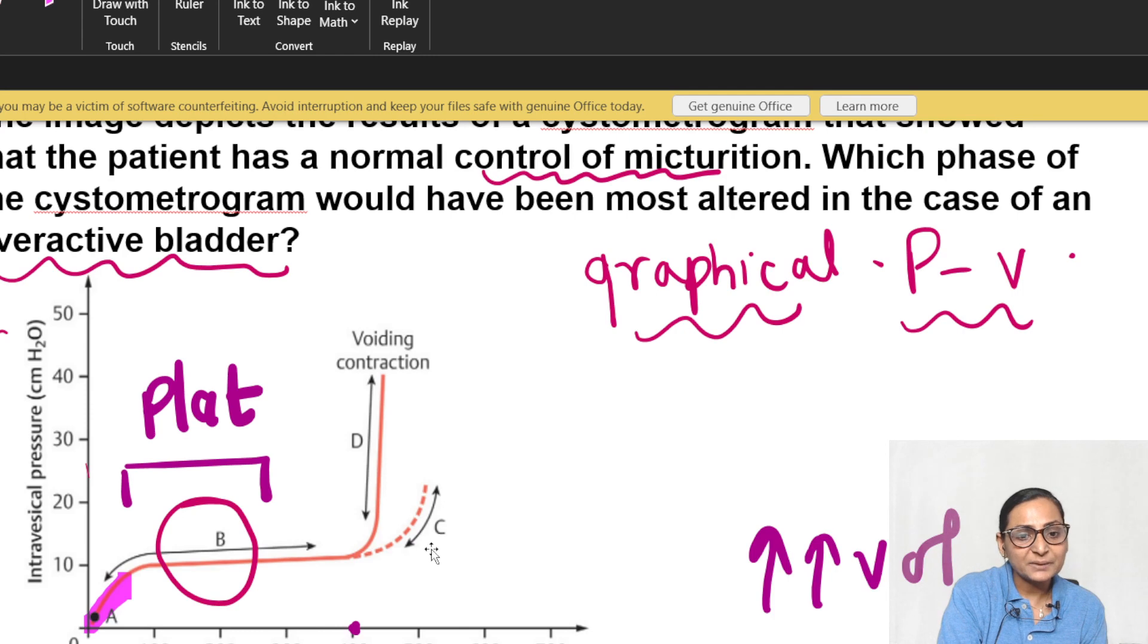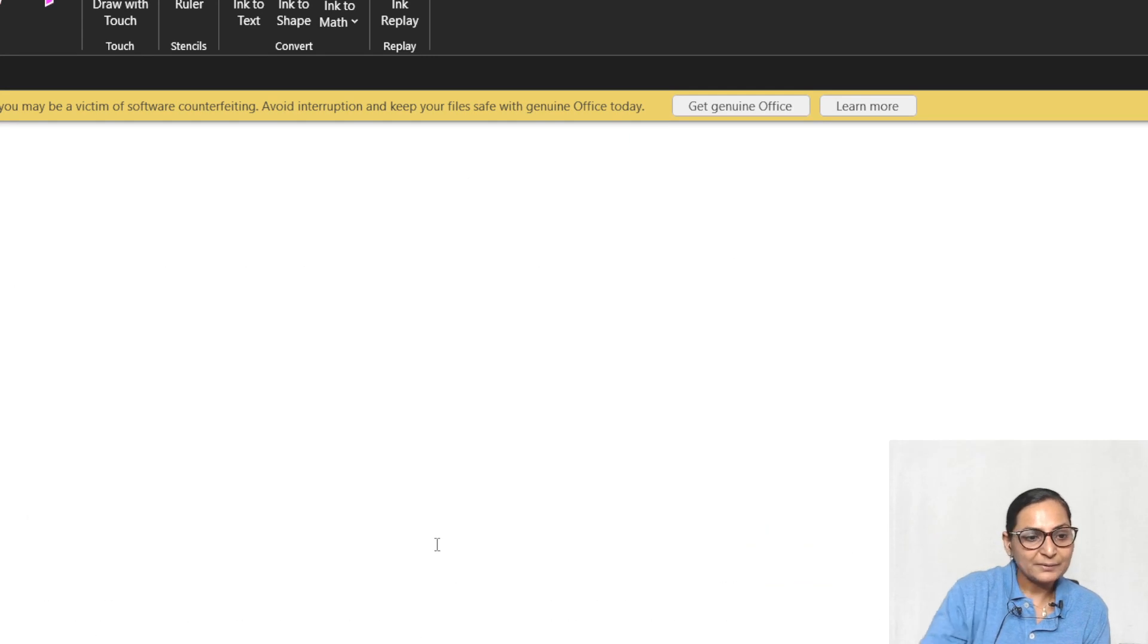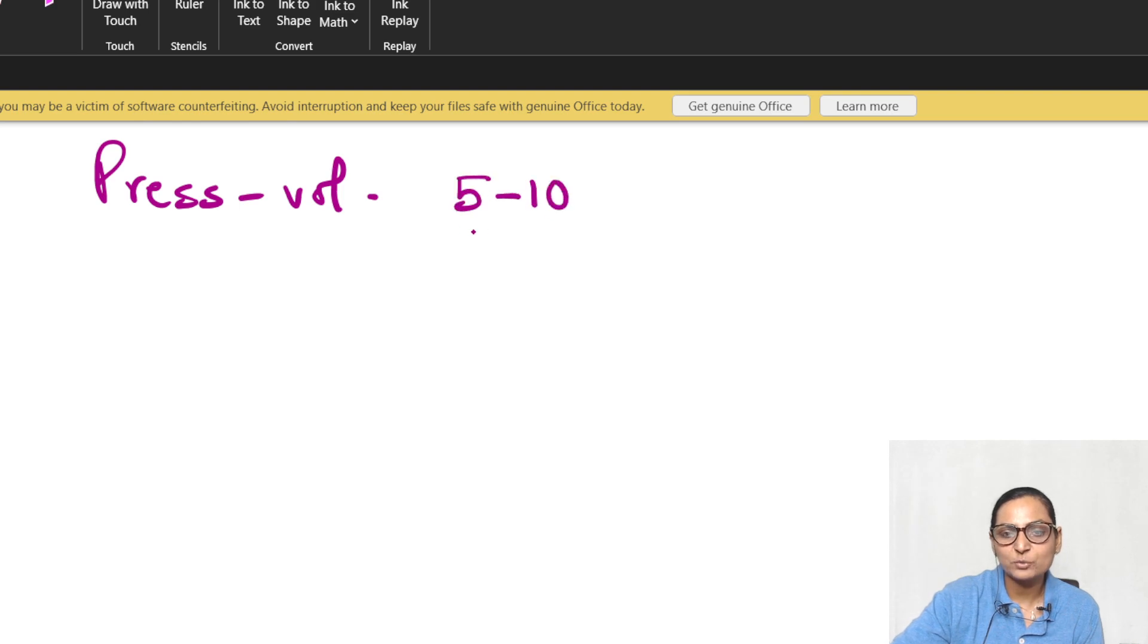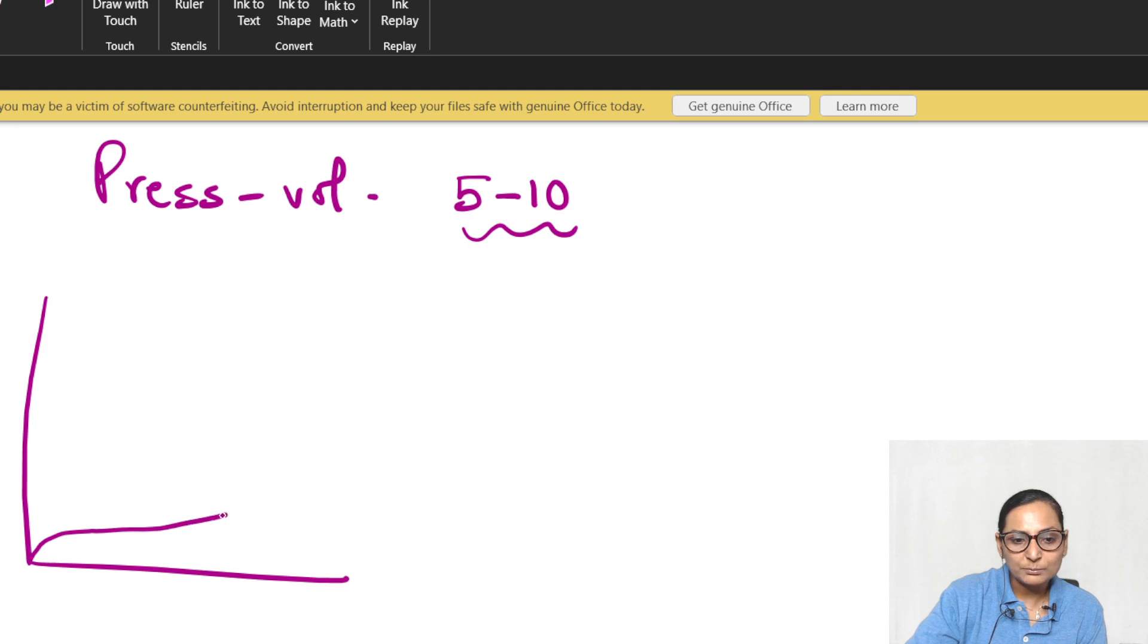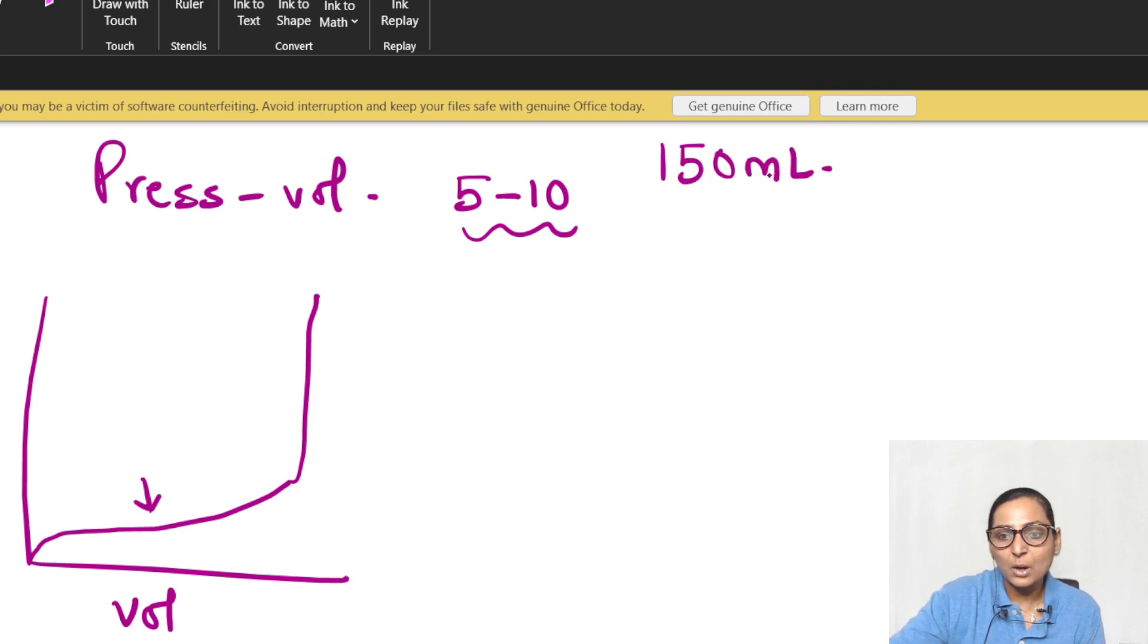This is a pressure-volume relationship. When small amount of urine is accumulated, there is a small pressure around 5 to 10 centimeters of water. But after that, even if you keep increasing the volume, you are getting a plateau, and ultimately there is setup of the micturition reflex. This is volume and this is pressure.